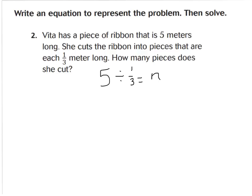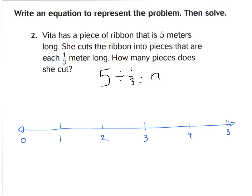We learned in previous lessons that whenever you divide a whole number by a fraction, you get a larger whole number because we're finding how many smaller pieces we have compared to the five larger pieces. So we have five divided by one third equals N — that's our equation. I'm going to draw a number line to solve it. Let's put a zero and a five on each end. I'm going to mark my whole number values. My divisor is one third, so I need to divide my dividend into one third pieces. One whole equals three thirds, so we mark one third, two thirds, three thirds. Knowing my multiplication facts: three thirds equals one, six thirds equals two, nine thirds equals three, twelve thirds equals four, and fifteen thirds equals five.